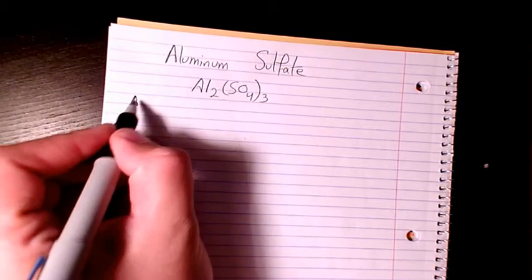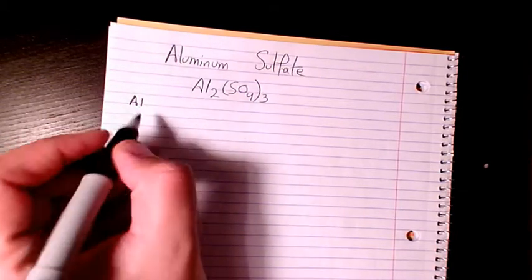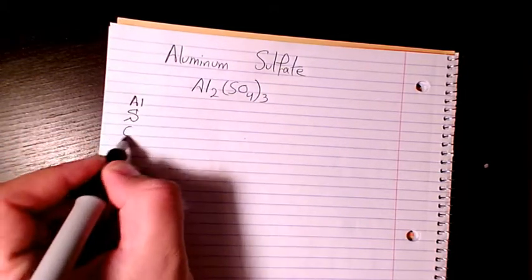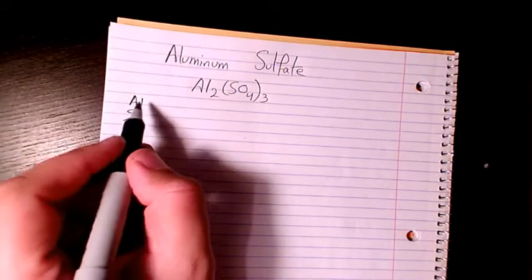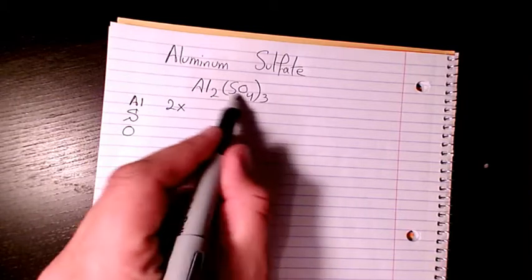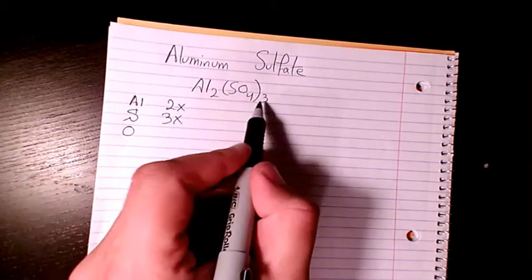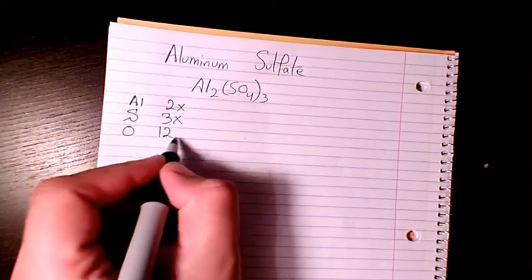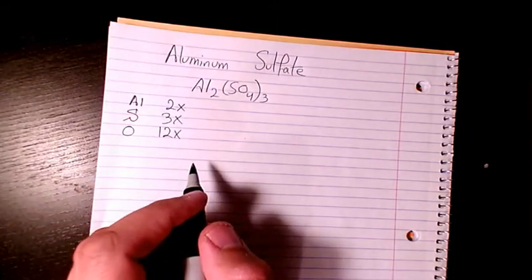In order to find molar mass or molecular weight, we need to find the atomic mass of all the elements here, which is aluminum, sulfur, and oxygen. We have 2 aluminum, 3 sulfur, and 3 times 4, which is 12 atoms of oxygen.